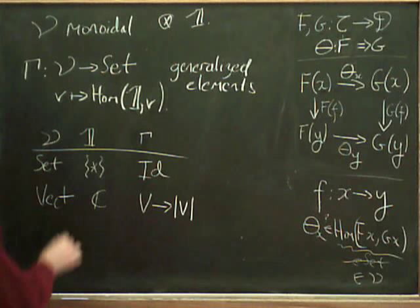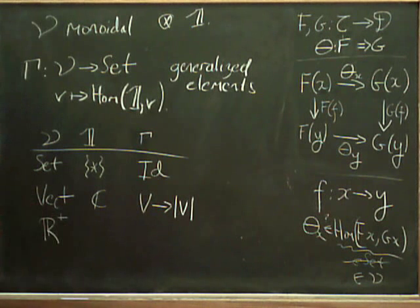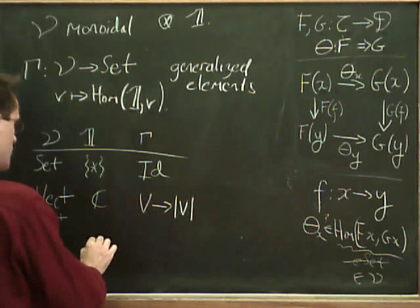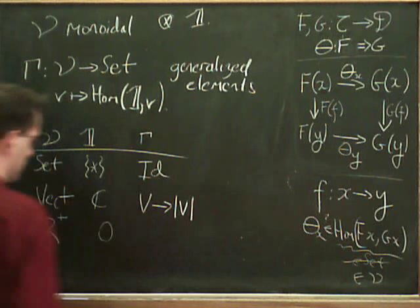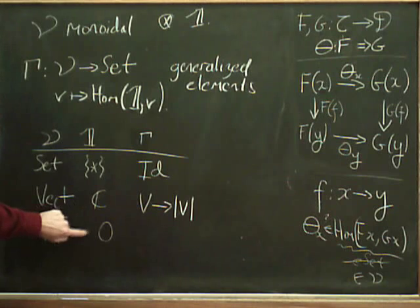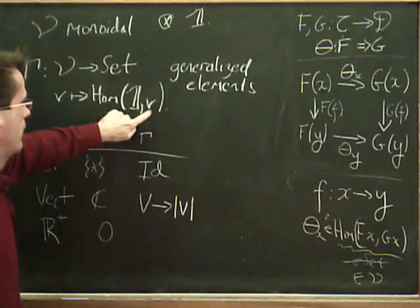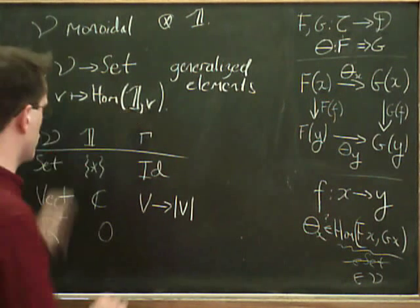So that's not terribly interesting. Well, it's on some level. But in the case that we're interested in, our category of non-negative real numbers with the infinity added. So the unit object is zero. And remember that the tensor product is addition. So the unit object is zero. And a morphism from the unit object to number V.